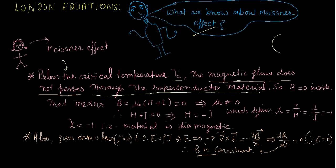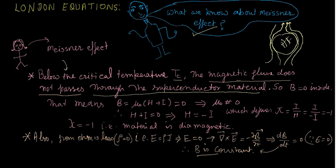If this is the superconducting material, the magnetic field lines cannot pass through it — the material basically repels them. This means the superconductor is a perfect diamagnetic material, and there is no magnetic flux passing through it. We can conclude from this that B equals zero inside the superconductor.